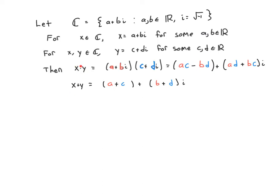So how do you add and multiply complex numbers? Well, any complex number can be written as a real part plus an imaginary part times i. So given two complex numbers, we write them as a plus bi and c plus di, where a, b, c, and d are real numbers. The product x times y can be simplified to this formula: the real part is the first parts minus the last part, and the imaginary part is the sum of the products of the outer and inner terms.